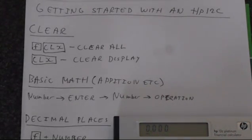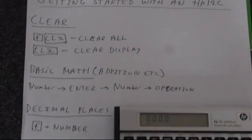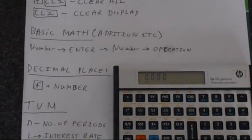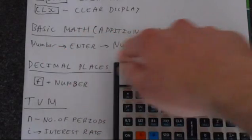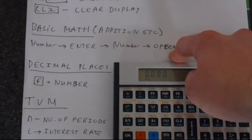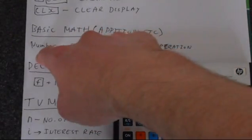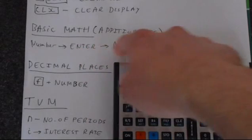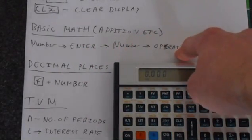So let's do some basic math, things like addition, subtraction, division. Very basic stuff. In reverse polish, we have to do it in a very certain way. We've got number, then we press enter, then we put in our second number, and then we press the operation we want to do.